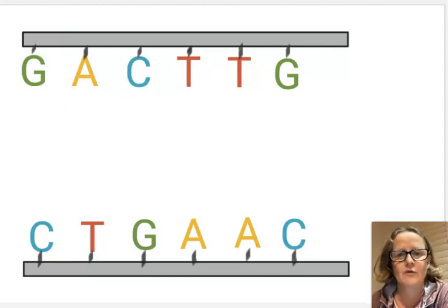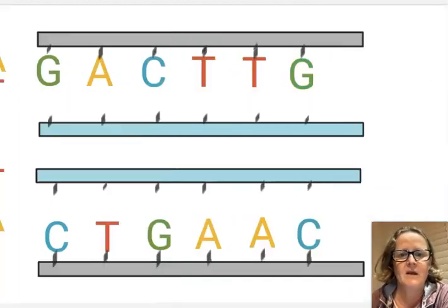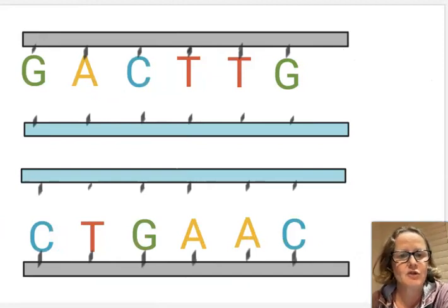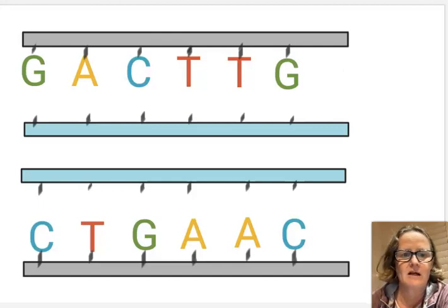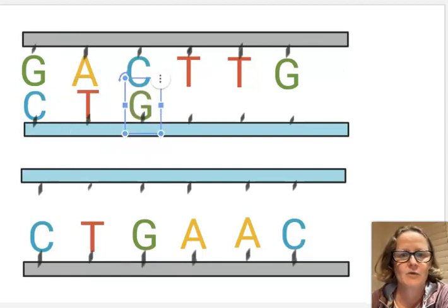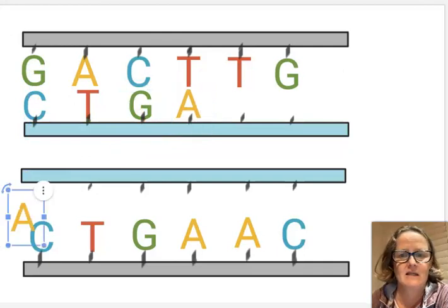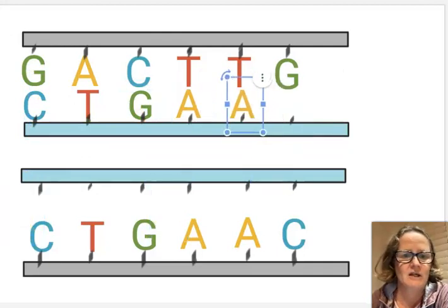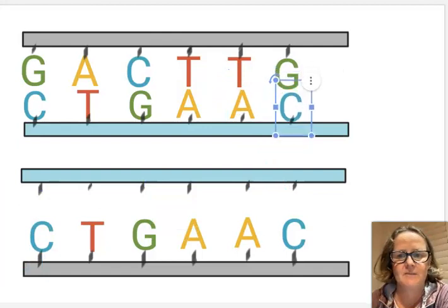What happens is you get another sugar phosphate backbone, and along it you build the nucleotides that match the opposite base pair. So every time you have a G, you have a C. A's tell you that T needs to be opposite. C's give you a G. T's tell you there's an A needed, and the G tells you that you need a C.